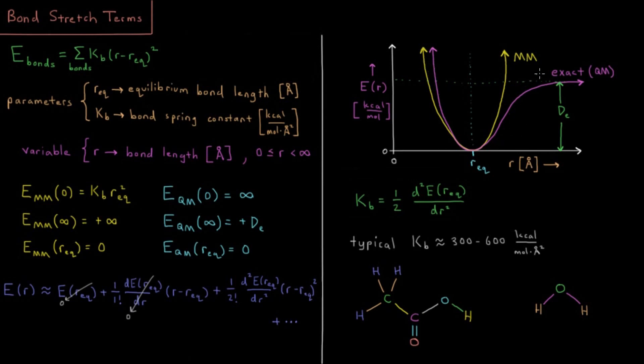At long range, you're obviously going to keep going forever up in energy, whereas the exact result eventually decays and the bond dissociates. In molecular mechanics, you cannot dissociate a bond because if you keep going, you keep going up in energy.